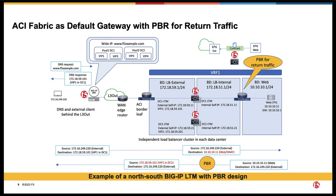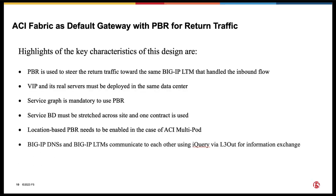The next design option is ACI Fabric as default gateway with PBR. In this design option, ACI Fabric is the default gateway of the real servers, and instead of using SNAT on Big IP LTM, we use ACI PBR to steer the returned traffic back to the same Big IP LTM in the same data center. Some highlights: SNAT is not used on the Big IP LTM; instead, PBR is used to steer returned traffic to the same Big IP LTM that handles the incoming traffic. VIP and its real servers must be deployed in the same data center. Service graph is mandatory. Location-based PBR needs to be enabled in the case of ACI multi-pod.